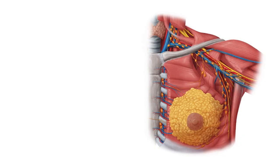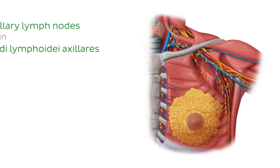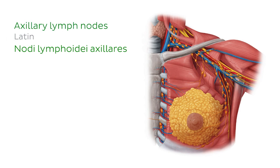As you can see in the illustration, many of the lymph nodes of the upper limb are concentrated in and around the armpit or the axilla, and these are known as the axillary lymph nodes. The axillary lymph nodes are a large group of approximately 20 to 30 nodes, which are generally subdivided into five groups.